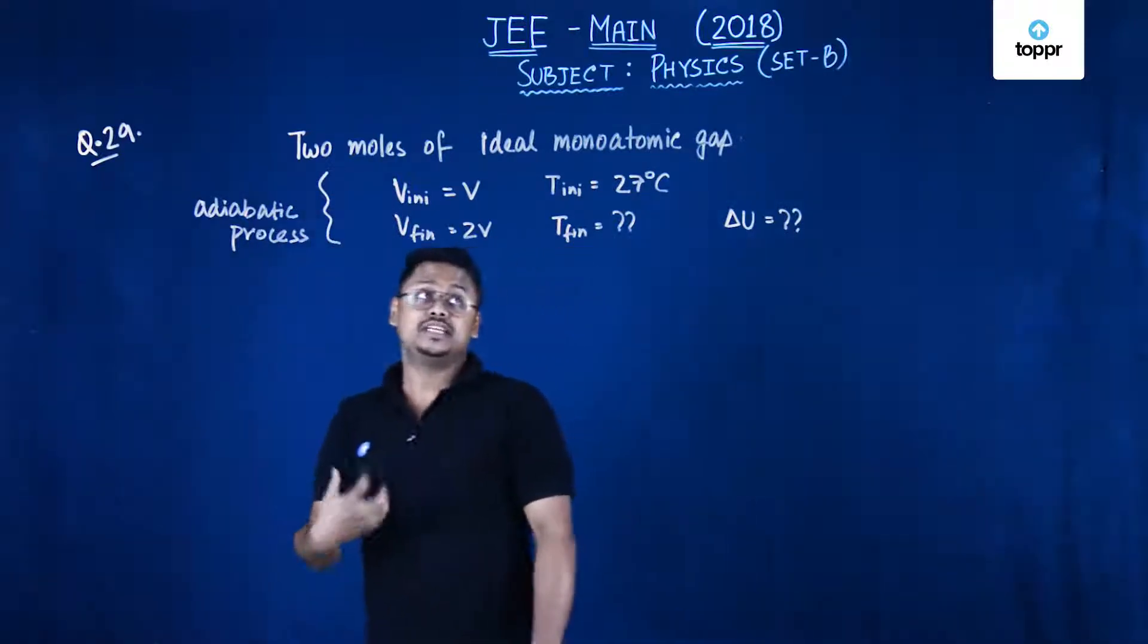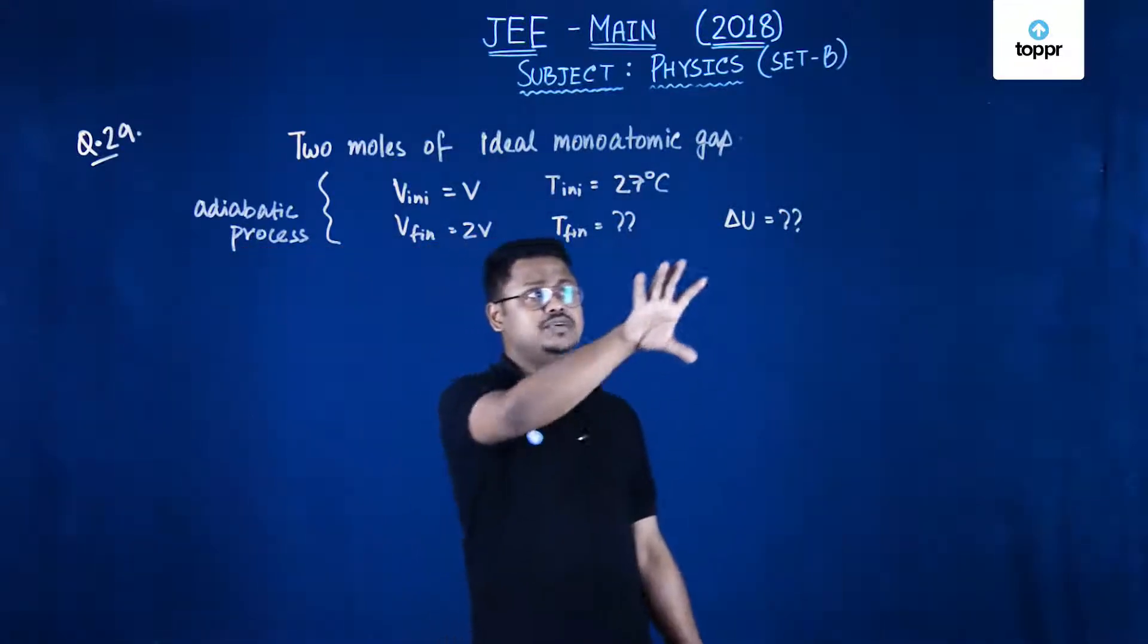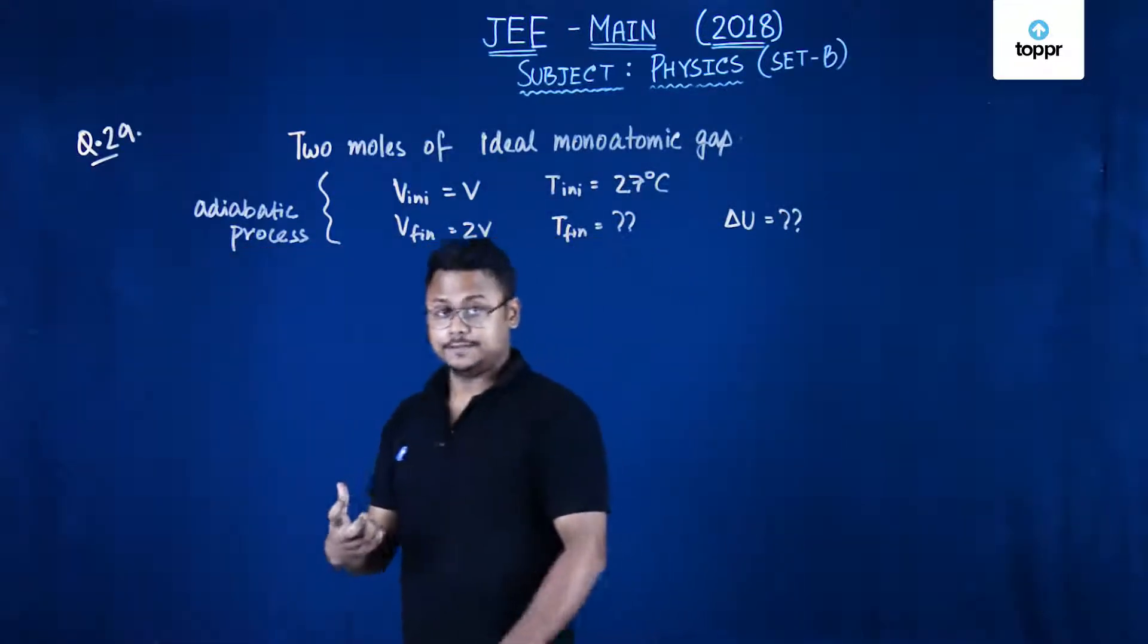Initial temperature is given as 27 degrees Celsius and you have to find the final temperature as well as change in internal energy.